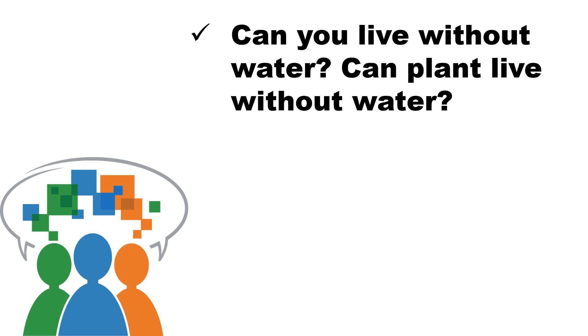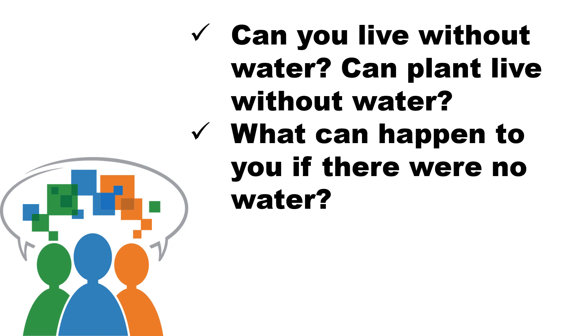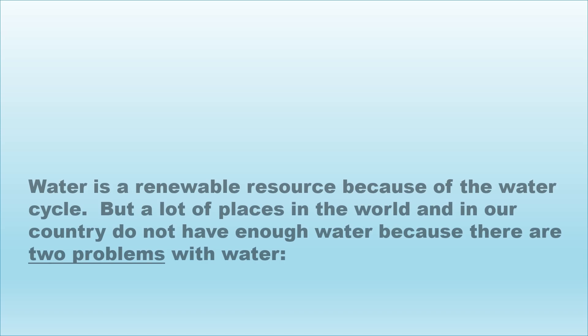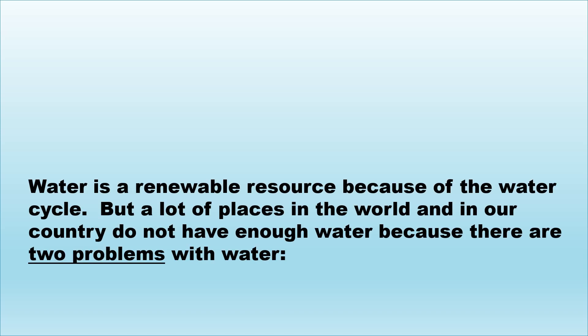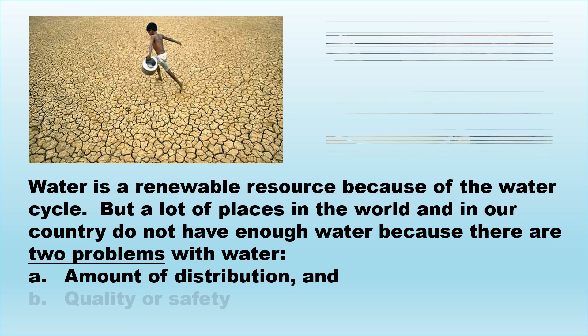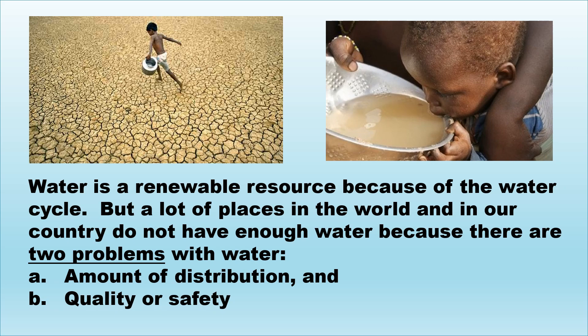Can you live without water? Can plants live without water? What can happen to you if there were no water? What can happen to plants and animals if there were no water? Water is a renewable resource because of the water cycle. But a lot of places in the world and in our country do not have enough water because of two problems: the amount and distribution of water, and the quality or safety of the water.